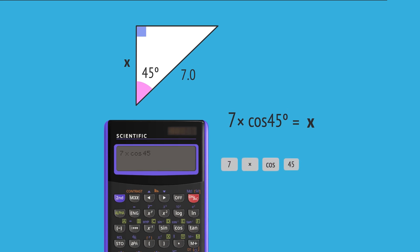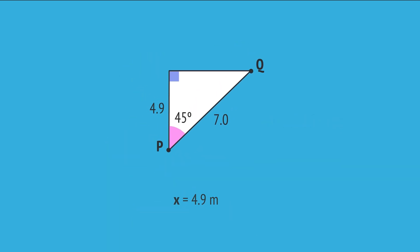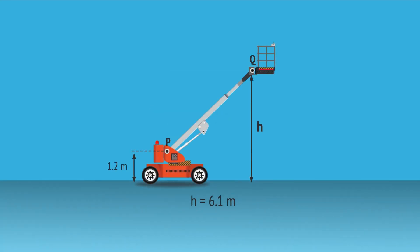which gives X equals 4.9 meters, rounded to one decimal place. Now, if we add this to 1.2, we get H equals 6.1 meters, the height of the platform above the ground.